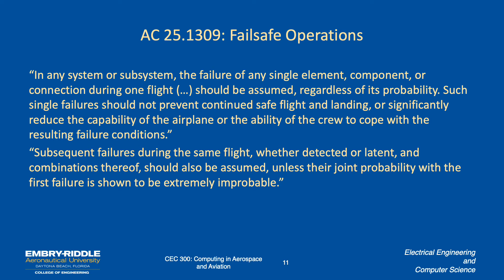Advisory Circular 25-1309 is talking about fail-safe operations. In any system or subsystem, the failure of a single element, component, or connection during one flight should be assumed regardless of its probability. Such a single failure should not prevent continued safe flight and landing, or significantly reduce capability of the airplane or the ability of the crew to cope. So failure is presumed — it's not 'failure is not an option.' Failure is presumed, and you have to figure out how to make the plane work in spite of failure. Subsequent failures, whether detected or latent, and combinations should also be assumed unless you can show their joint probability with the first failure is extremely improbable.